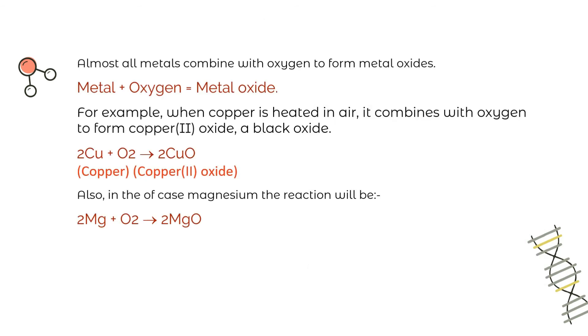Coming back to our topic, almost all metals combine with oxygen to form metal oxides. If there is a chemical reaction so definitely there is going to be chemical equations. So for metals there will be metal plus oxygen equal to metal oxide. For example when copper is heated in air it combines with oxygen to form copper two oxide, a black oxide. When you will take two atoms of copper plus oxygen you will get copper two oxide. Also in the case of magnesium, the reaction will be two atoms of magnesium plus oxygen will give you two molecules of MgO.